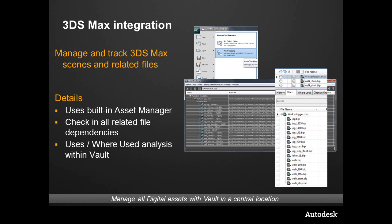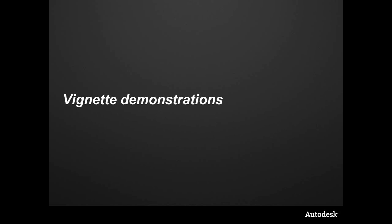The 3ds Max integration is managed through asset tracking. This allows us to take the Max design and all of the other assets and check everything in. Inside of Vault, we'll have a uses/where-used relationship, and we can check in and check out, open from Vault — providing that first-class integration with all data in one central location. So when we finish off the project or need to load something up, it's all in one centralized location. Coming up inside of this module, we're going to be taking a look at demonstrations of each one of these integrations.